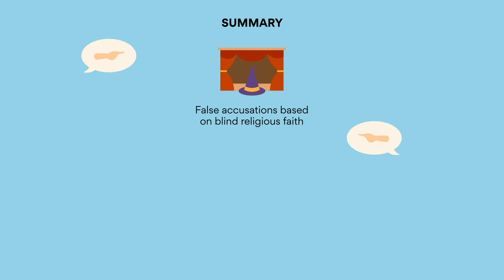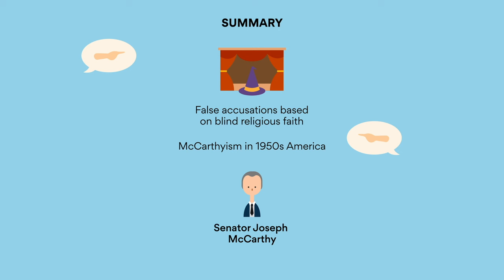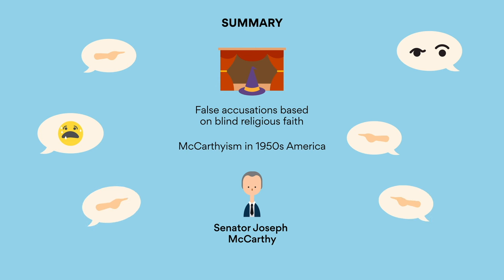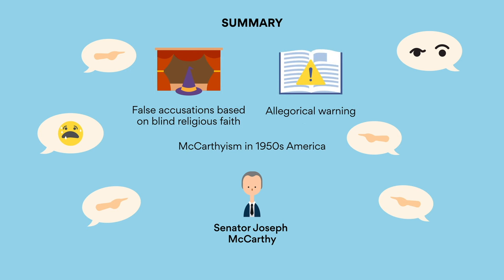However, the play was written during another type of witch hunt — McCarthyism in 1950s America. This was a political movement in which Senator Joseph McCarthy attempted to control the spread of communism by placing any communist sympathizers on a blacklist. This resulted in widespread fear of communist influences and a political hunt similar to the Salem witch trials, as civilians attempted to escape their own charges by accusing other innocent individuals of treason. Thus, given the historical context of the time, Miller uses The Crucible as an allegorical warning against the dangers of McCarthyism in 1950s America.